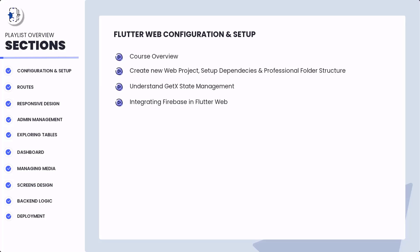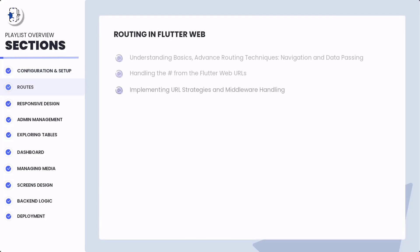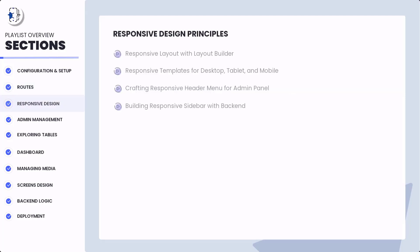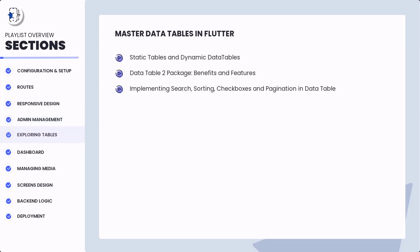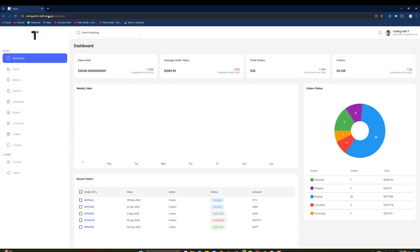We have already covered five previous sections. The first was configuration and setup, then routing and navigation covering middlewares, hash sign removal, and URL strategies. Third was responsive screens — very important sections. After that we created the admin management, and the last one was about tables: simple tables, DataTable, DataTable2, and paginated DataTable2.